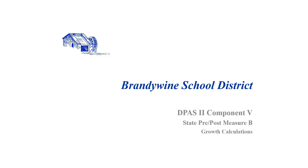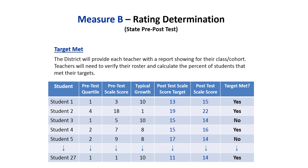The following podcast reviews the process used to determine class and/or cohort growth for the Measure B pre/post tests and the related Component 5 ratings. The district will provide class or cohort data reports listing the following information for each student: pre-test quartile, pre-test scale score, typical growth value, post-test scale score target, and the student's actual post-test scale score.